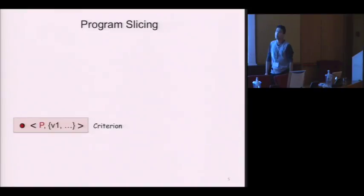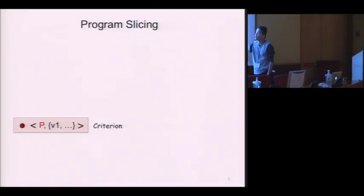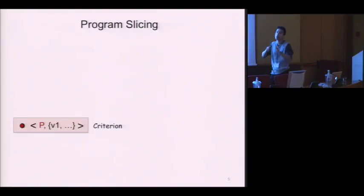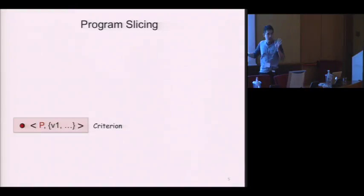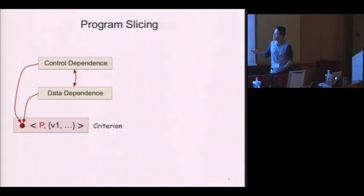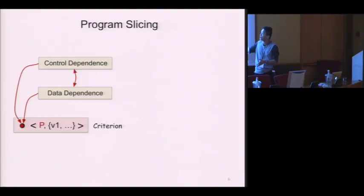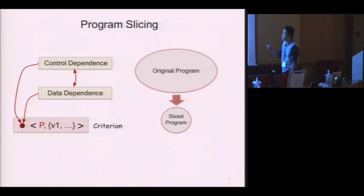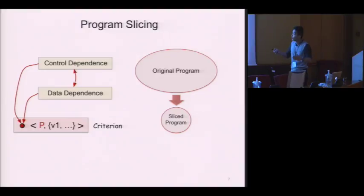For slicing, the most important keyword is called criteria, which usually consists of a program point with some interesting variables. The job of slicing is to find parts of the program which have impact on the given criteria. This can be achieved by recursively finding out the statements and variables which have control and data dependency on the given criteria. As a result, the original program could be sliced into a program with a much smaller size by removing those criteria-irrelevant statements.